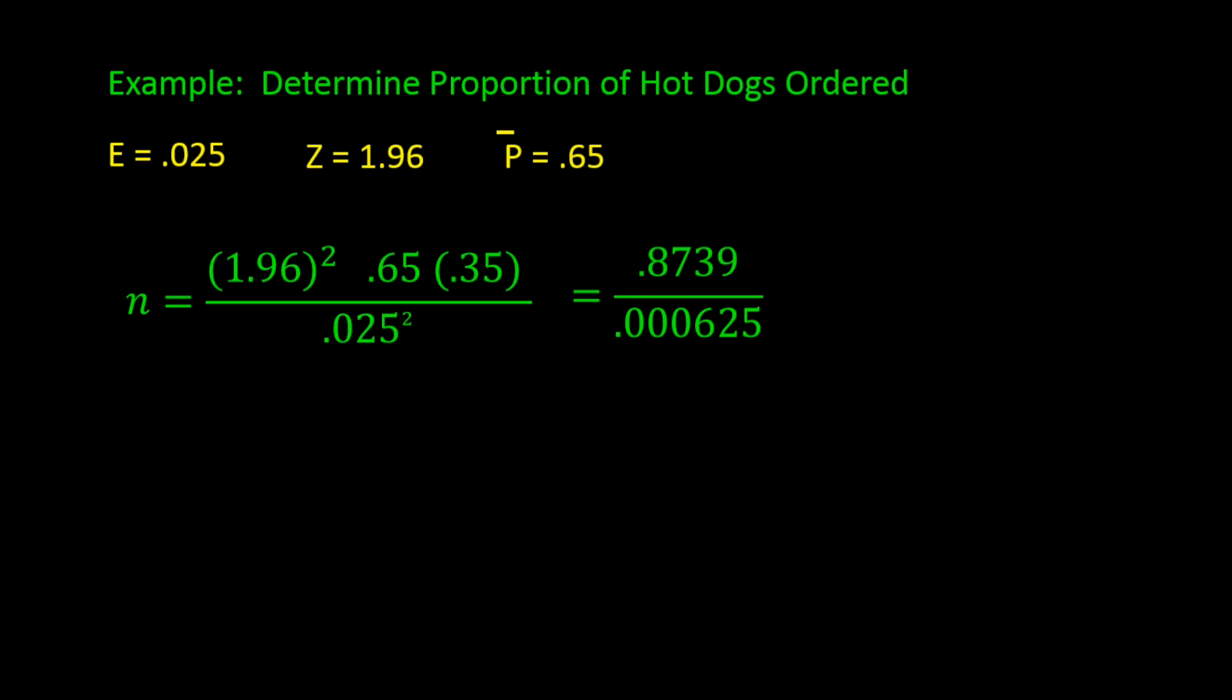Which is 0.8739 divided by 0.000625, which is 1,398.24. We would usually round that up to the next integer which is 1,399, but for convenience sake we would say the optimal sample size is 1,400.